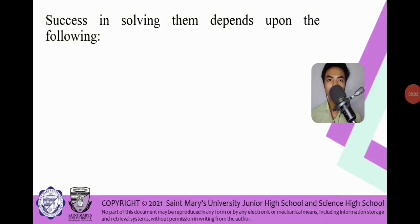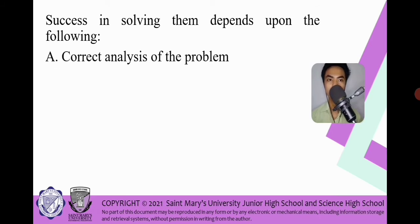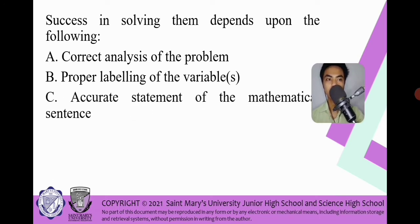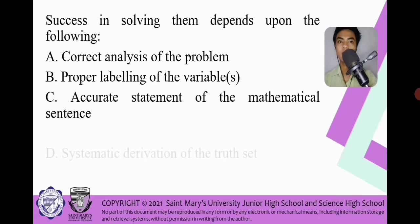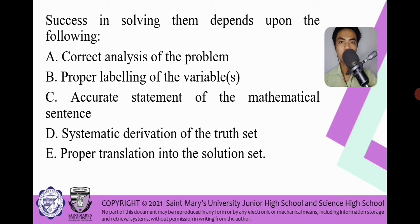There are success steps in solving rational algebraic expressions depending on the following: correct analysis of the problem, proper labeling of the variables, accurate statement of the mathematical sentence, systematic derivation of the truth set, and proper transition into the solution set in order to get the correct answer.